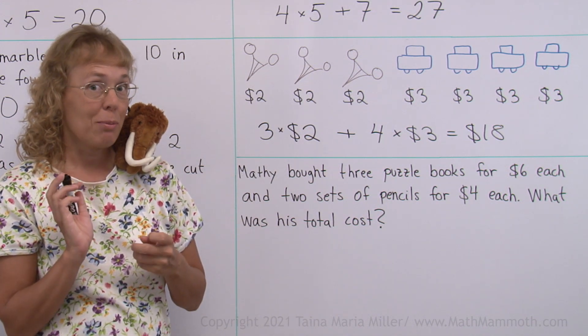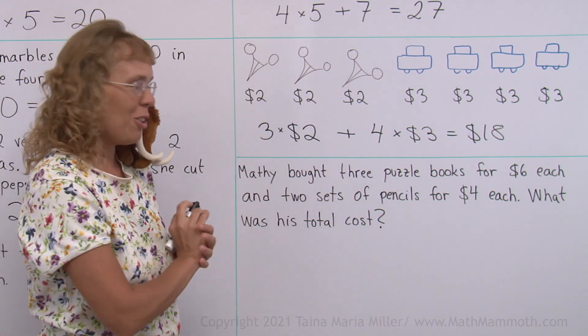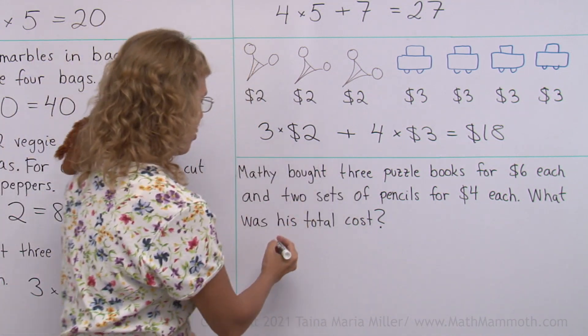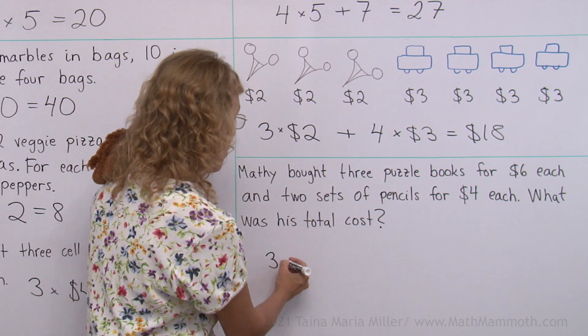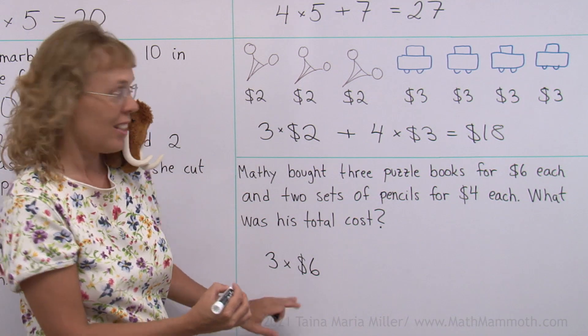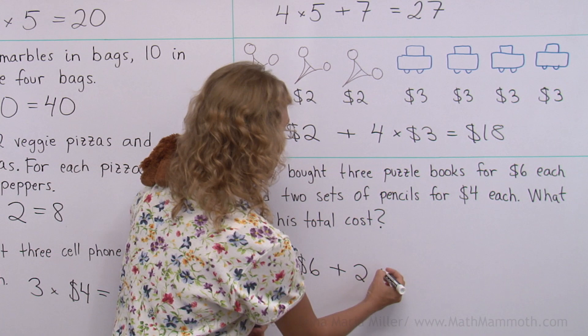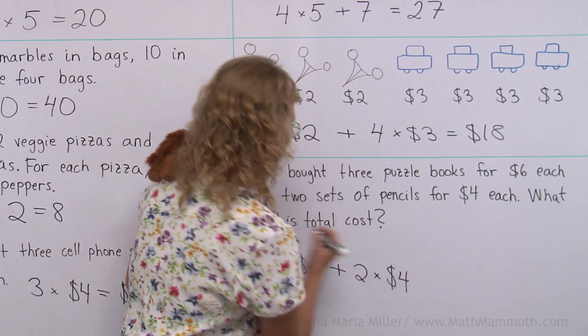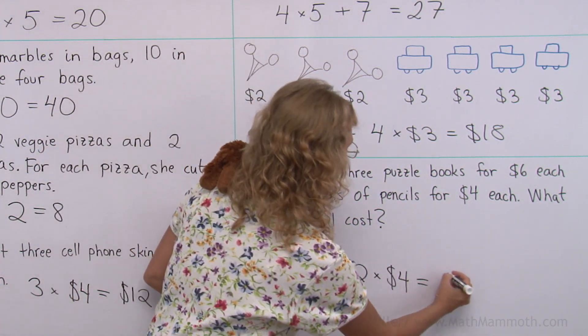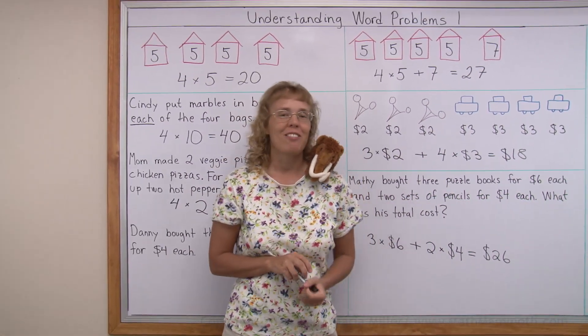Now you write or tell me a multiplication and addition for the total cost. Three puzzle books and they cost the same each. So we multiply. There's the word each there. Like this. And then, there's the and, so we add those two sets of pencils that cost four dollars each. And here's 18, here's eight. And then we add. So that's easy. 26 dollars total cost. Okay, we're all done with this lesson.